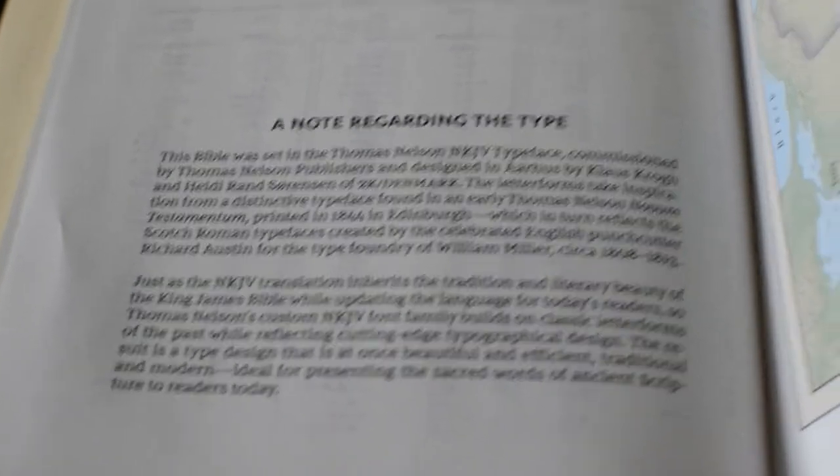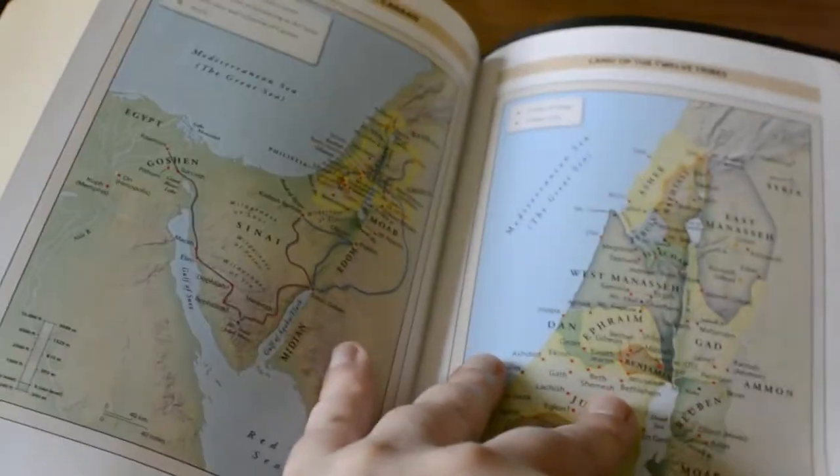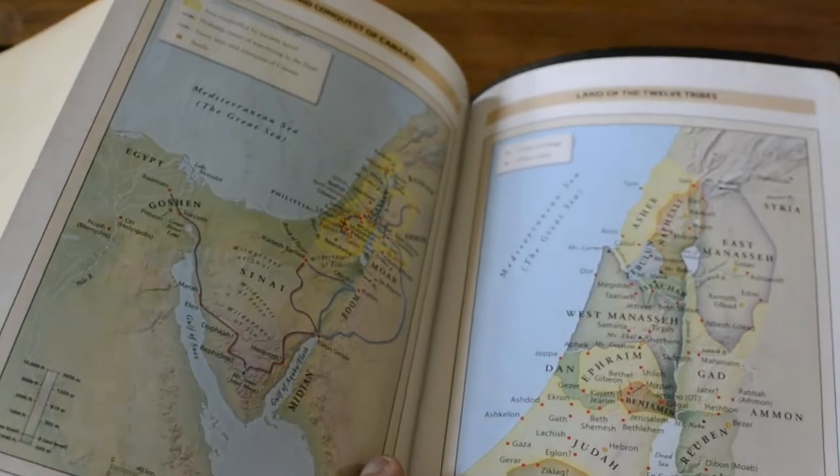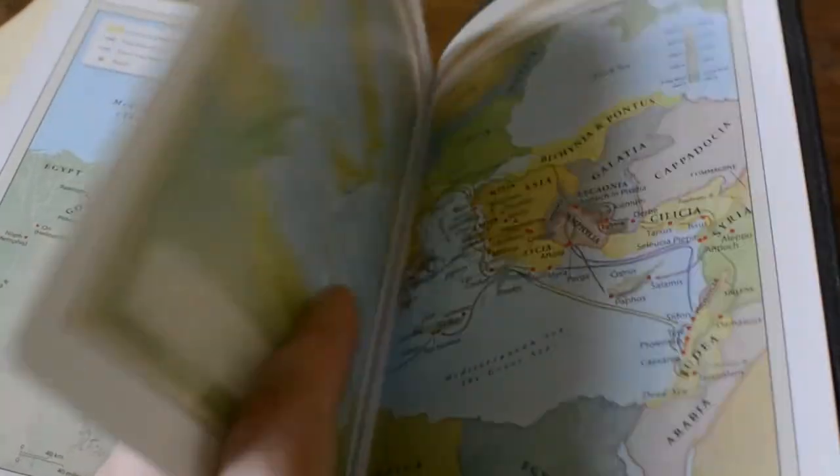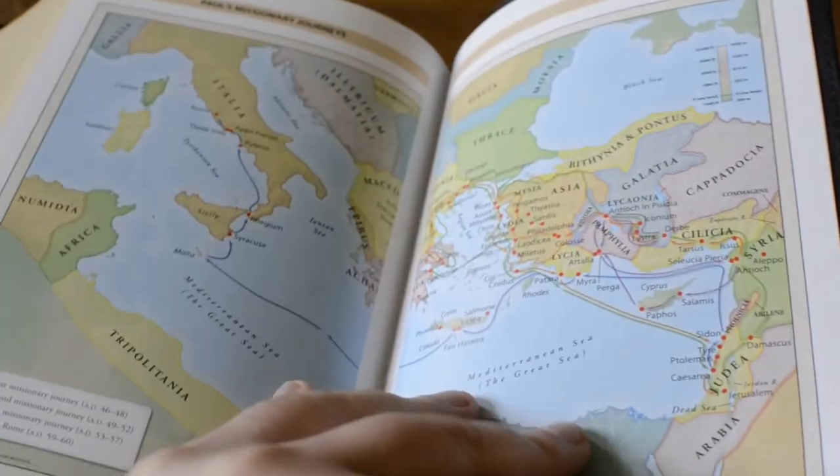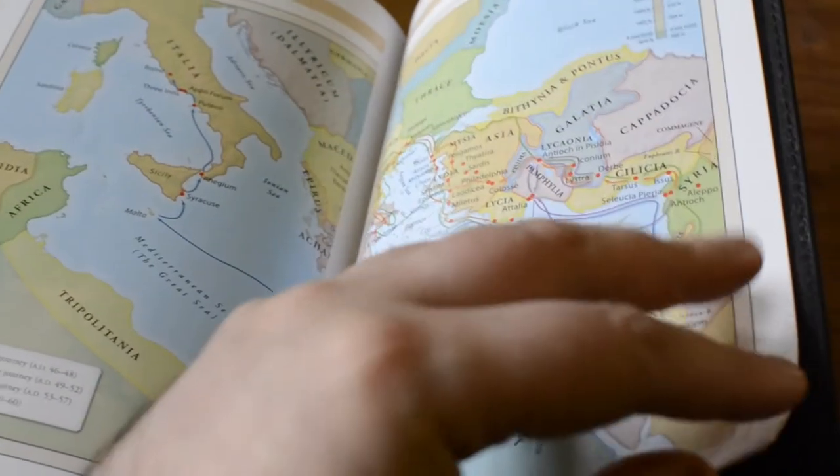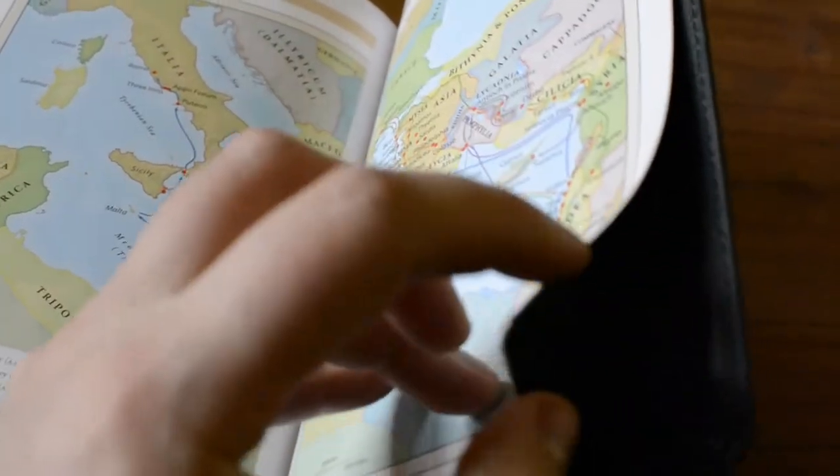We got the maps, Thomas Nelson maps. I really like these maps. The colors are vibrant and very rich. The fonts that they use are readable, crisp. I always like to have a few maps in the back of every Bible.